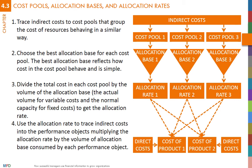The allocation rate is calculated as follows: 79,200 euros divided by 48,000 euros equals 1 euro 65. This number can be interpreted as follows: for every 1 euro spent in material, 1 euro 65 of resources is also consumed from this cost pool.